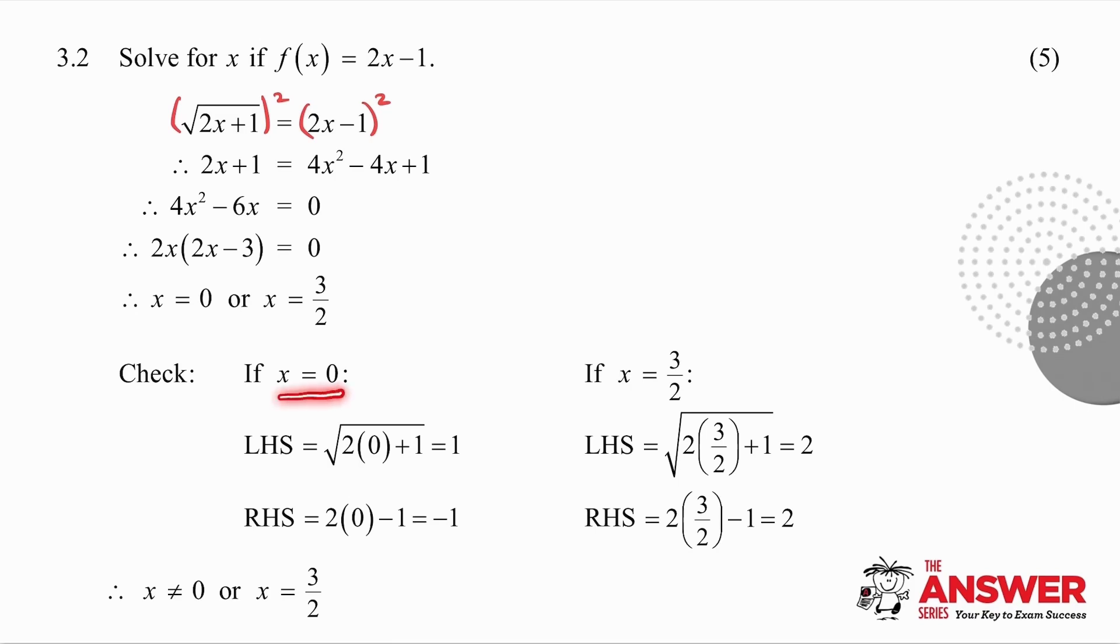So if x is 0, substitute into the left hand side and I get 1. If I substitute into the right hand side, I get minus 1. Because the left and the right hand sides are not equal, it means x cannot equal 0. What about if x is 3 over 2? I substitute into the left hand side and I get 2. Substitute into the right hand side and I also get 2. And because my answers are the same, it means x is equal to 3 over 2.